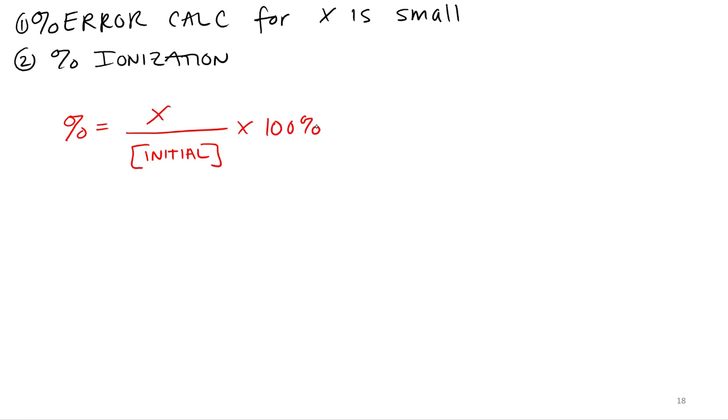And for the percent ionization, that's it, that's your percent ionization. For the x is small approximation, you're going to look to see how big the percent error is. If the percent is less than 5%, it was a good approximation.